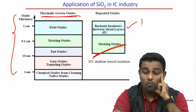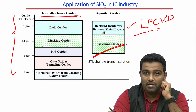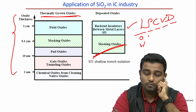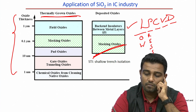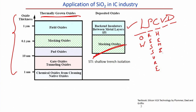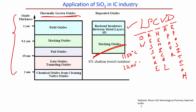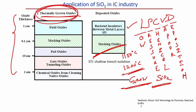There are two things to remember: one is LPCVD — low pressure chemical vapour deposition — carried out at 1150 to 1200 degrees centigrade to grow silicon dioxide thermally.